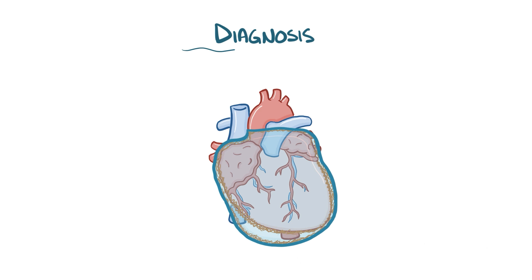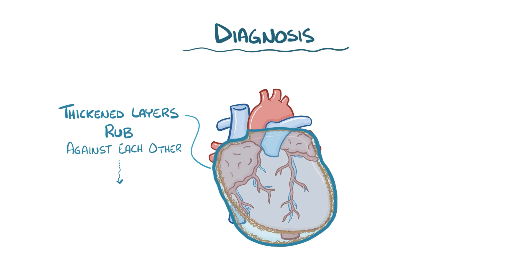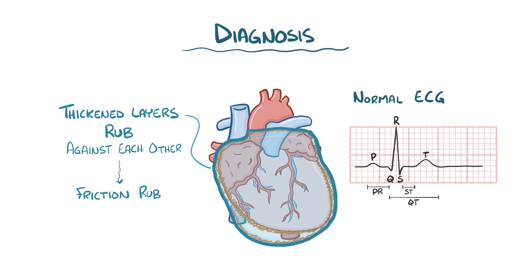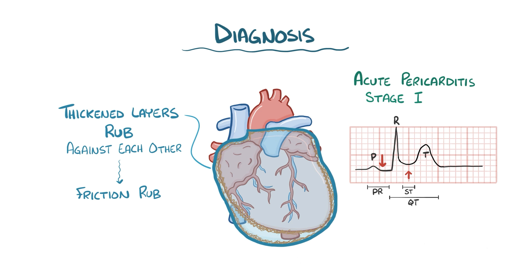There are a few ways to diagnose pericarditis and pericardial effusions. First, when the thickened layers of the pericardium rub up against each other, it creates a friction rub that can be heard on auscultation — it sounds like two pieces of leather rubbing against each other. On an electrocardiogram, in the first couple of days to weeks, there can be ST segment elevations and PR segment depressions. After that, the T waves tend to flatten and then become inverted over a few weeks, and eventually the ECG returns back to normal.